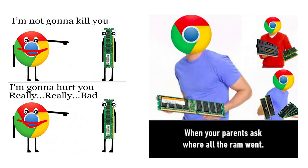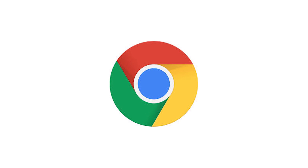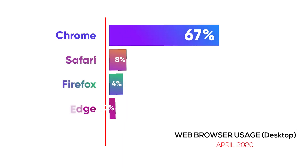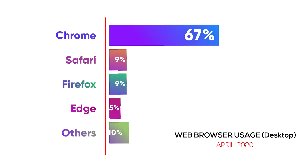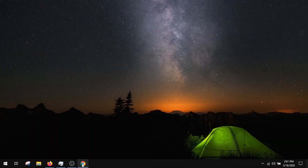Although notorious for its intensive resource usage, Google Chrome is the most popular web browser out there. Apart from the resource-hungry nature of this browser, the occasional black screen is one of the issues faced by its users. So let's learn the fastest and easiest way to fix it for once and for all.